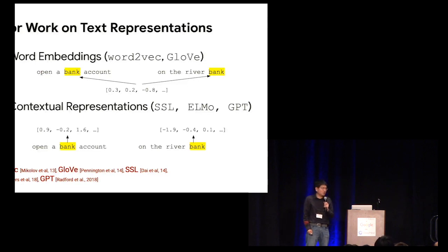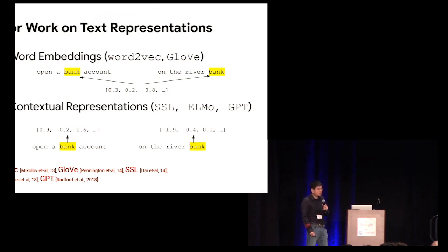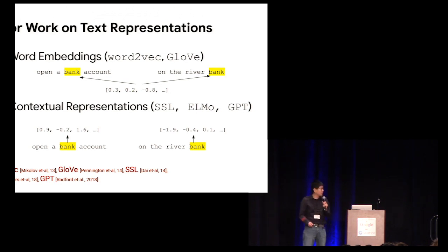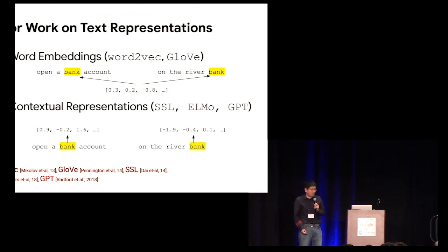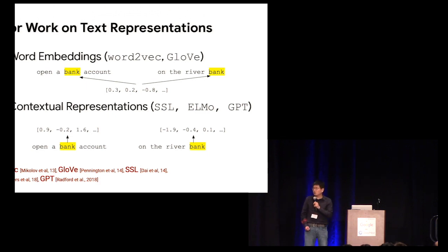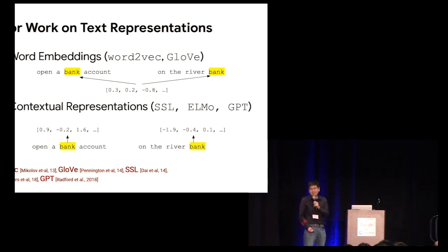Pre-training has been shown to be very powerful for initializing deep learning models for NLP tasks. However, contextual representation, where the model has been proven to be more powerful than word embeddings. For contextual representations, there are two ways we identify for applying them, which we are going to discuss in detail in the next two slides.